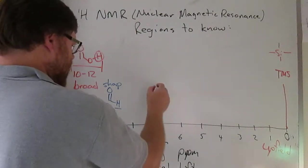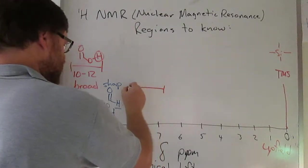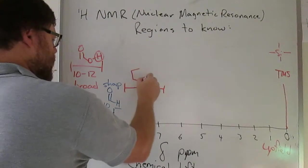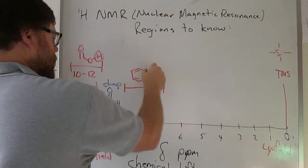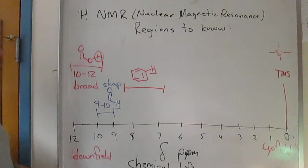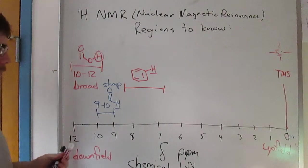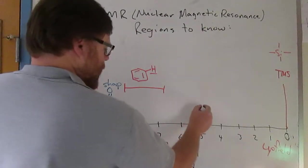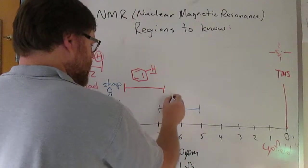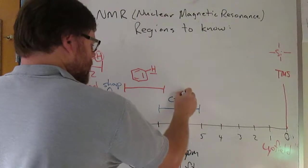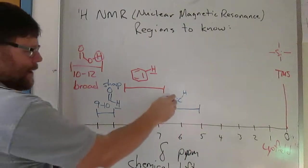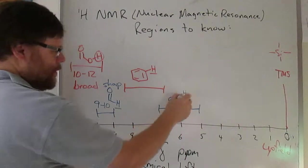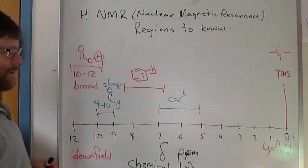From about 6.5 to 8.5 come protons bonded to benzene rings, aromatic molecules. From about 5 to 7 come non-aromatic protons bonded to sp2 carbons.